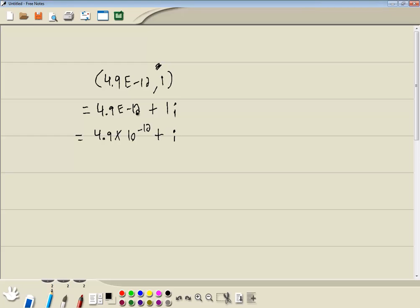And ten to the negative twelve, this is scientific notation, that means we move our decimal place twelve places to the left. So we've got point one, two, three, four, five, six, seven, eight, nine, ten, eleven, four, nine plus i.